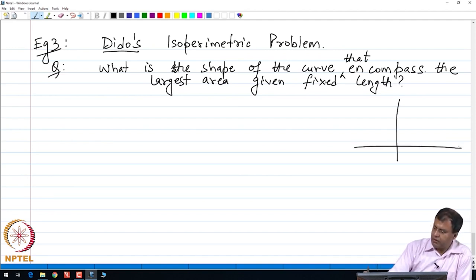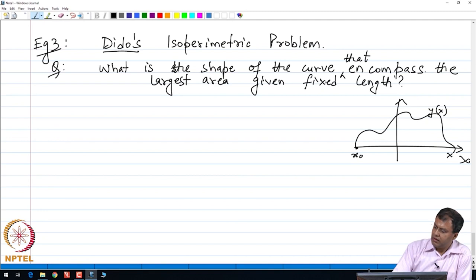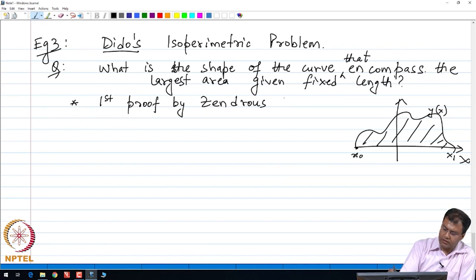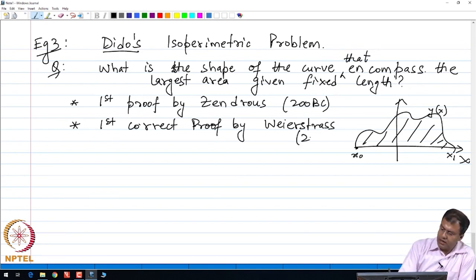In terms of the diagram, let us say that we are given a curve and we have to figure out the shape of this curve such that it encompasses the area swiped, which is the largest among all possible areas. It turned out that the earliest proof was given at the time of Dido herself by a Greek scientist by the name of Zenodorus in 200 BC. However, the proof was very sketchy. The first version of the correct proof was given by Weierstrass himself about 2000 years later.